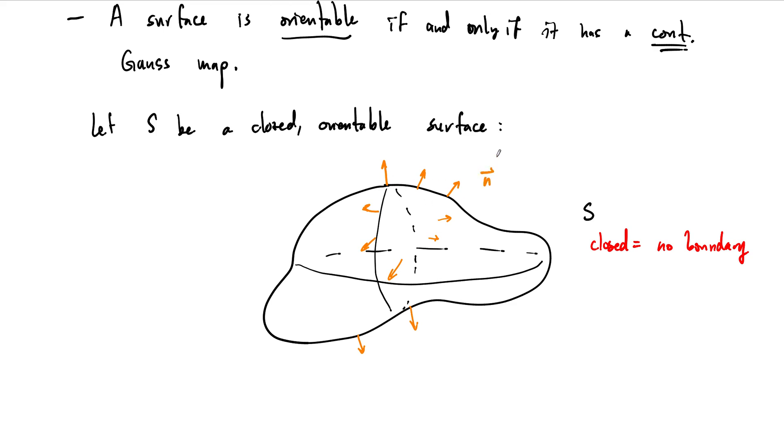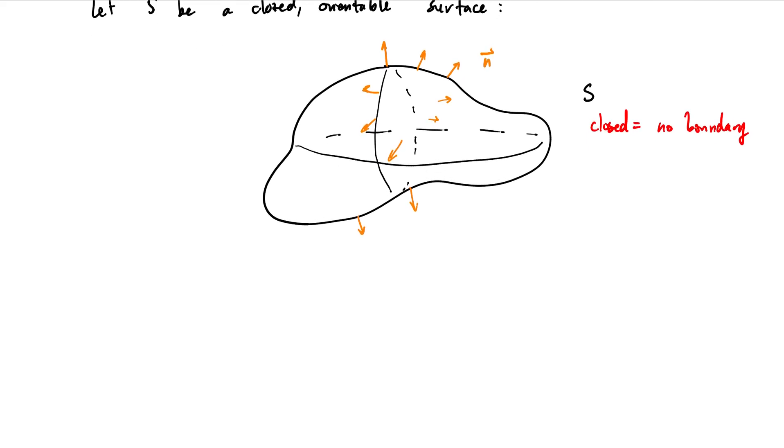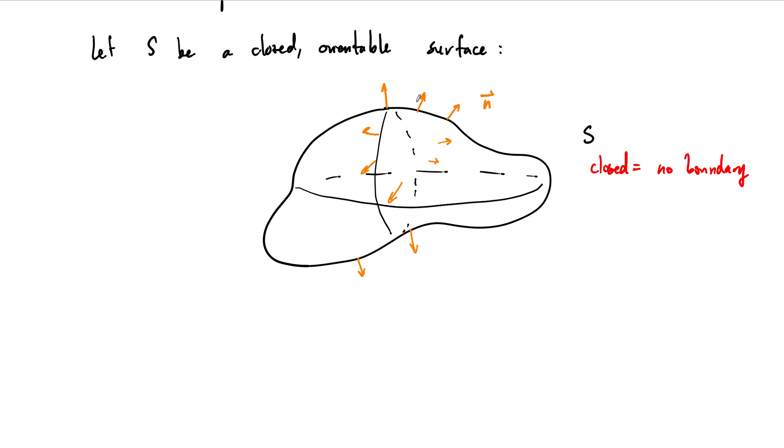So it's orientable, and now the way I've drawn this I've tried to draw all of these normal vectors from the Gauss map as pointing outward away from the bounded region. In this case we have two choices: either these vectors can point outward or they can point inward. For a closed surface, the closed surface encloses a bounded three-dimensional region.